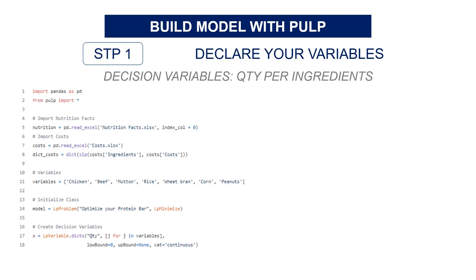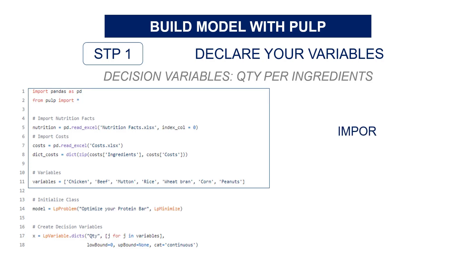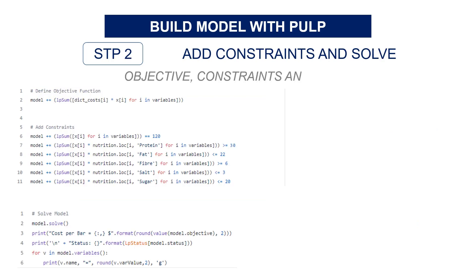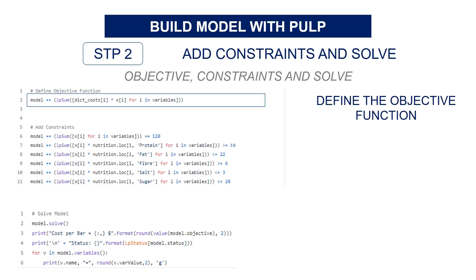Now let's build the linear programming model. We'll be using the Python library PuLP to create and run our model. We'll start by importing the library and the parameters including the ingredient names and nutrition facts. Then we create the model to minimize an objective function and add one decision variable for each of the ingredients. The objective function is the total cost per bar — the sum of the quantity per ingredient in grams (our decision variables) multiplied by the unit cost per gram stored in the dictionary dict_cost.